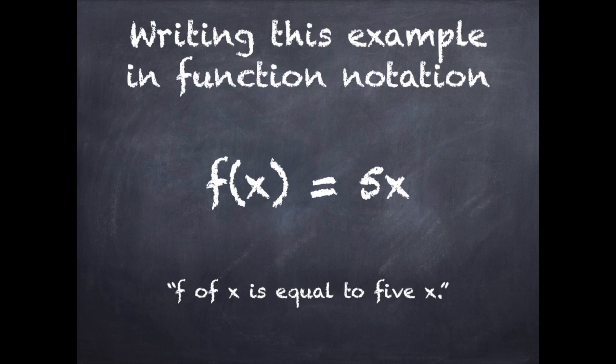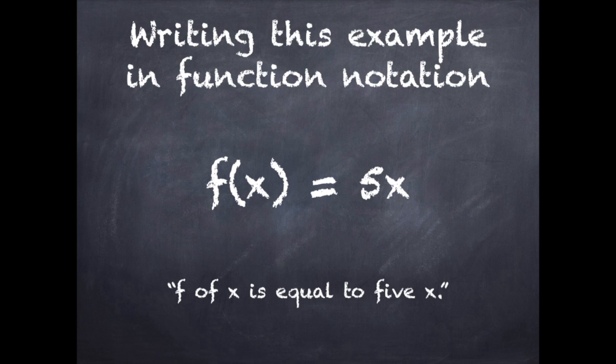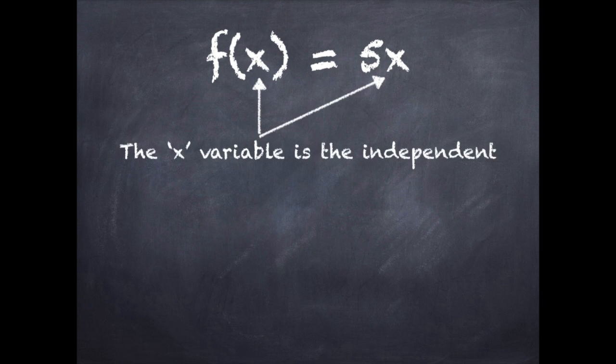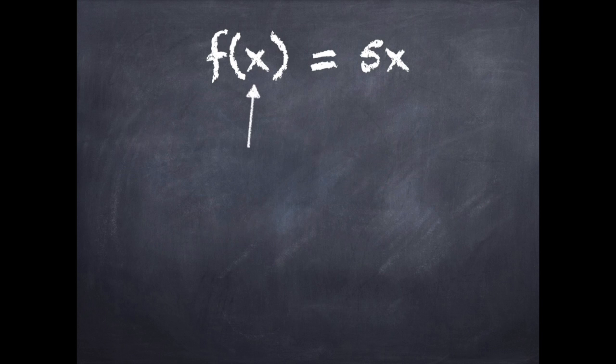So let's look at writing this in function notation, and it is read f of x is equal to 5x. Remember, the x variable is independent, f of x is dependent.